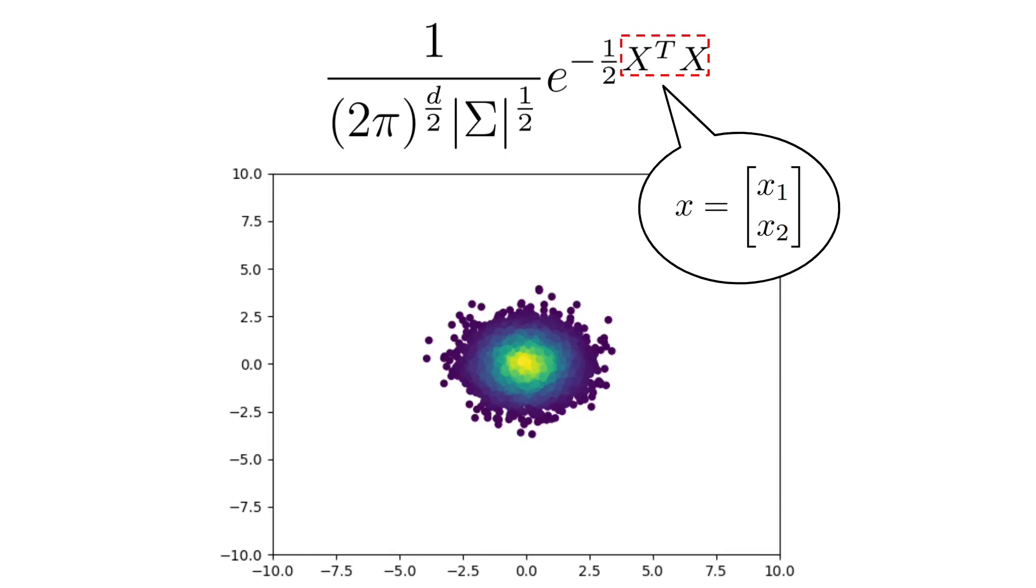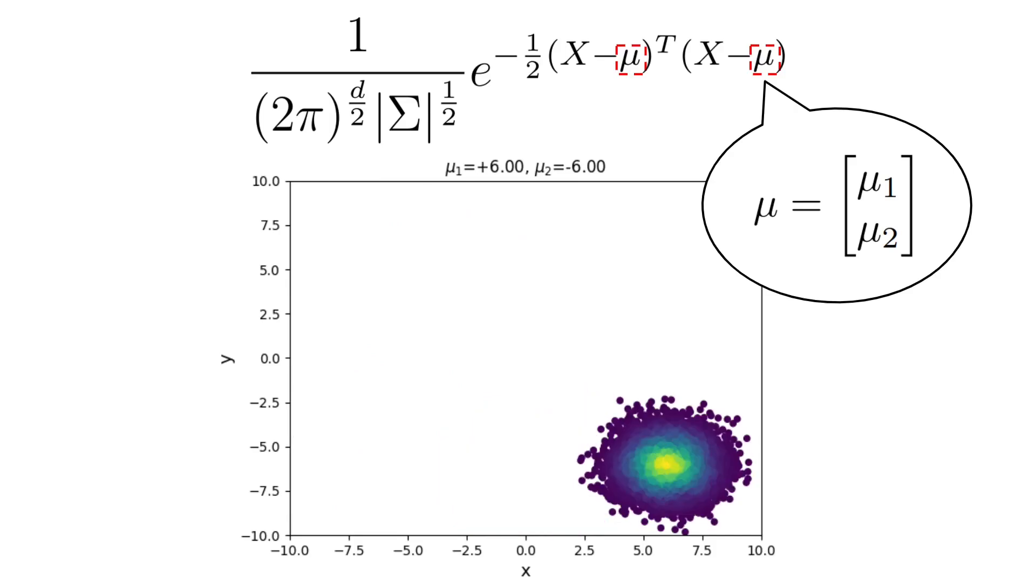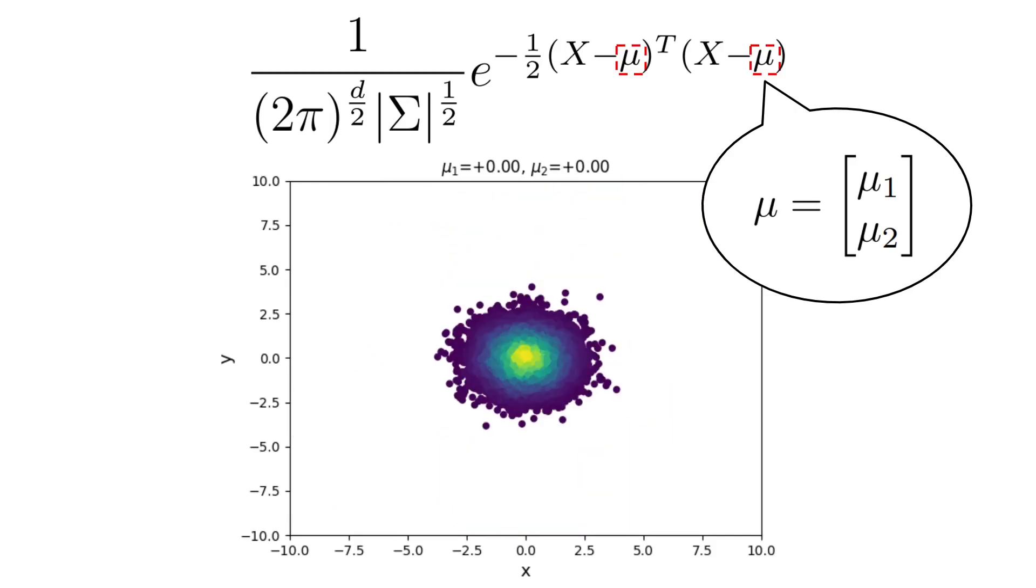Then, the square of the input in the exponent is done by taking the dot product between the transpose vector with itself. And, as in the one-dimensional case, we change the center of the bell curve by extracting the mean mu, which this time is not a scalar, but a vector.